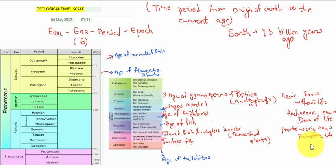The geological time scale is generally the time period from the origin of Earth to the current date. So the sequence of events that occurred from the origin of Earth to till date is represented in the form of a time scale that is called the geological time scale. We know that the Earth is estimated to be 4.5 billion years old.